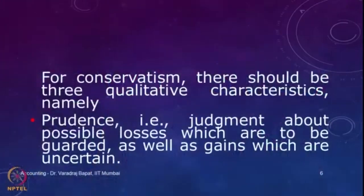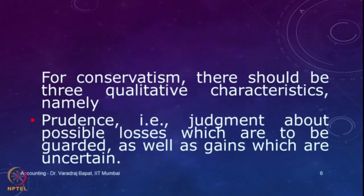For conservatism, there are 3 important qualitative characteristics. The first one is prudence — the judgment about losses which are to be guarded as well as gains which are uncertain. Even if there is a slight possibility of a loss, we account for it. If you remember, we discussed provisions when we discussed the balance sheet. Whenever there is a likelihood of a loss — there is no certainty the loss will arise, but there is a chance — we estimate the likely loss and make a provision, showing it in the balance sheet as a liability. But when it comes to gains, we do not account for uncertain gains. This is the first qualitative characteristic known as prudence.